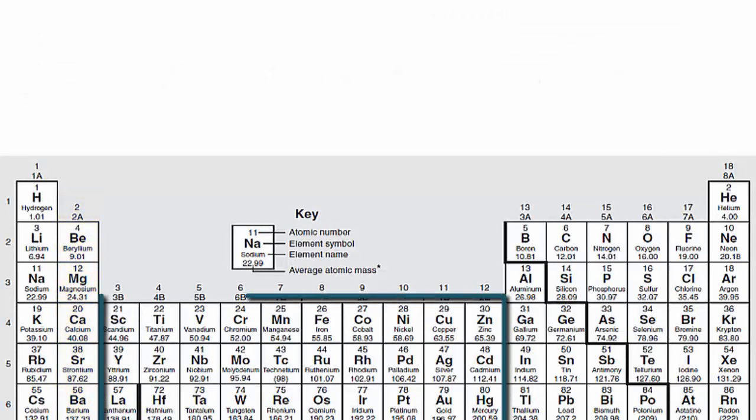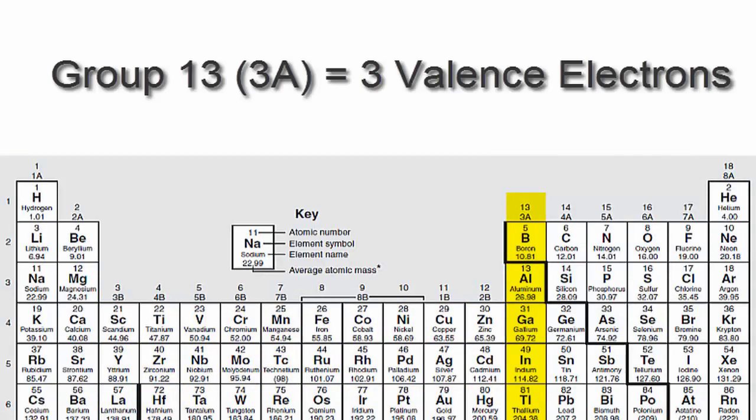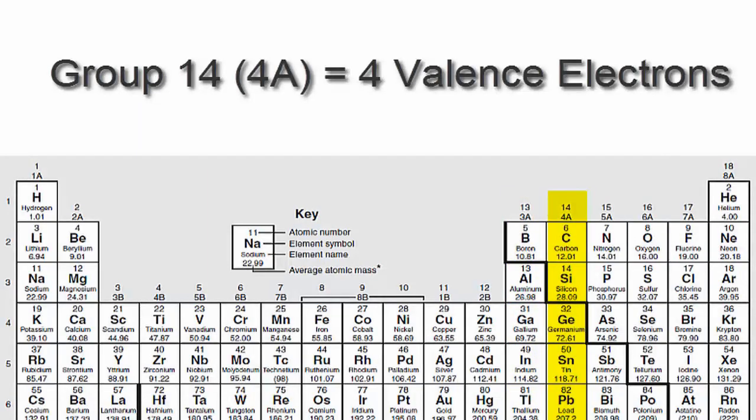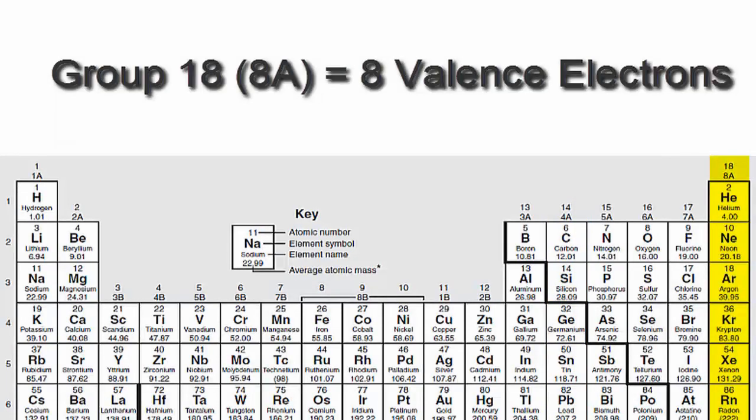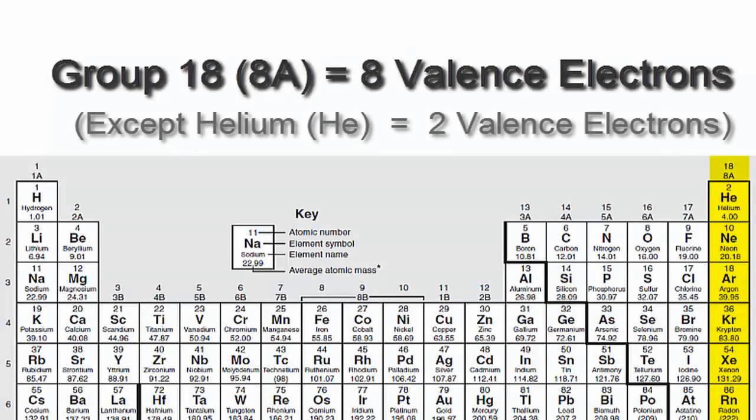We'll skip over the transition metals since they're a bit more complicated and probably don't apply to you. We'll go to 13 or 3A, which have three valence electrons, then 14 or 4A. Each of those elements in group 14 or 4A have four valence electrons, all the way up to group 18 or 8A, which have eight valence electrons.